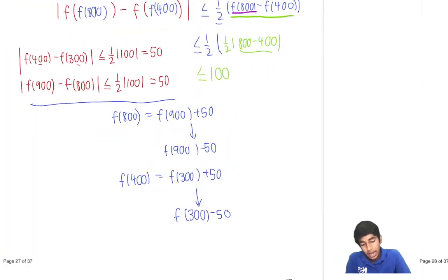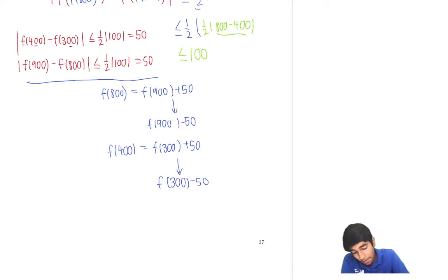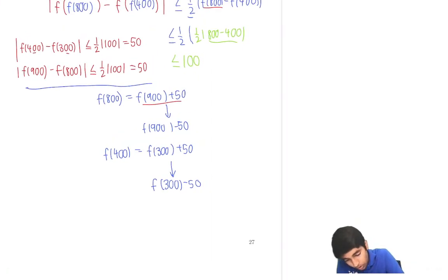So based on those conclusions that we made, what is the largest possible value of f(800) minus f(400)? We want the biggest possible value. So let's make f(800) as big as possible. So at most, f(800) can be f(900) plus 50. So at most, this expression will be